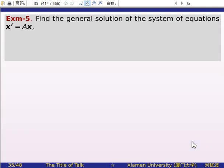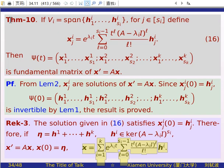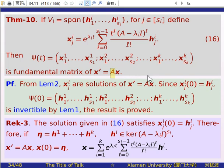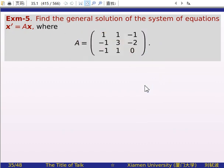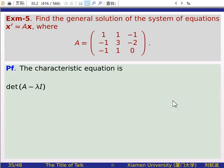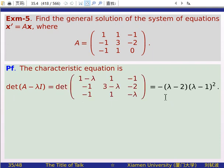This theorem provides a very simple way to solve the system of linear ordinary differential equations with constant coefficients, even if the matrix A is not diagonalizable. Now we will show an example. We consider the linear system x' = Ax where A is a specific 3×3 matrix. We want to find the general solution. The first step is to compute the eigenvalues by writing the characteristic equation: det(A - lambda*I) = 0.